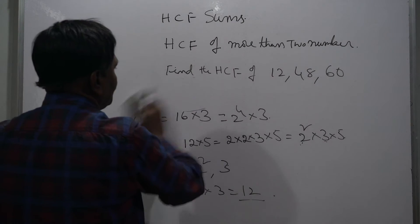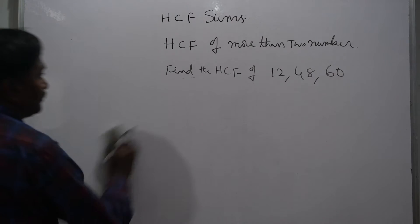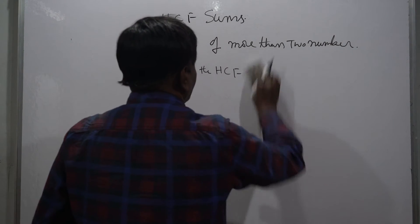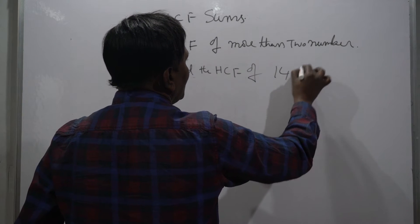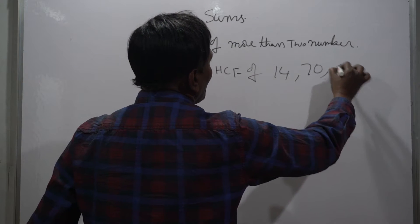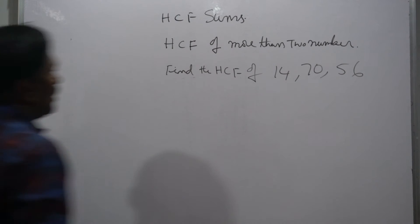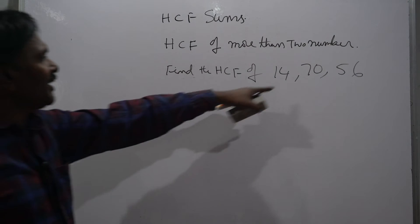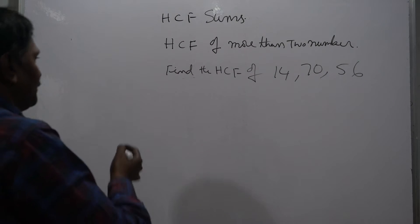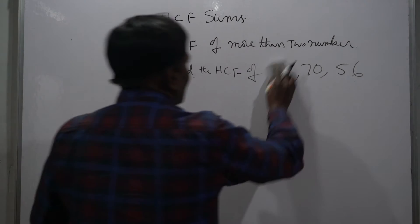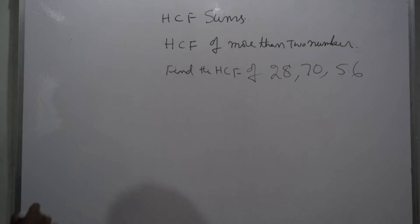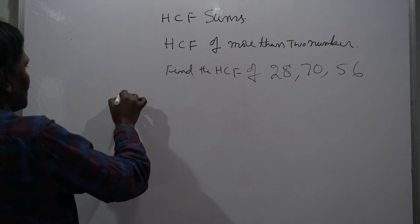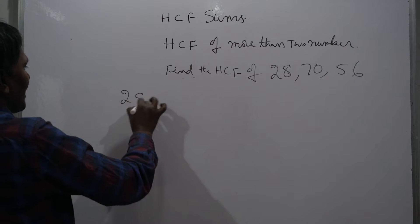Next, we will take one more example: HCF of 28, 70, and 56. Same procedure, we have to take the prime factors.